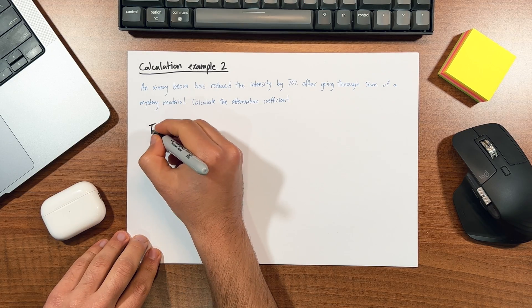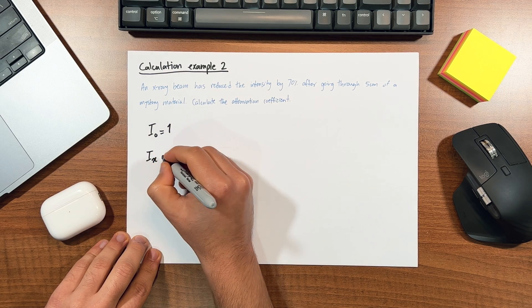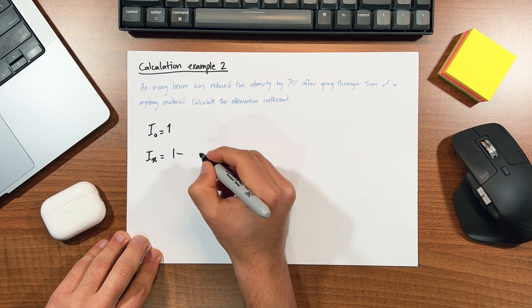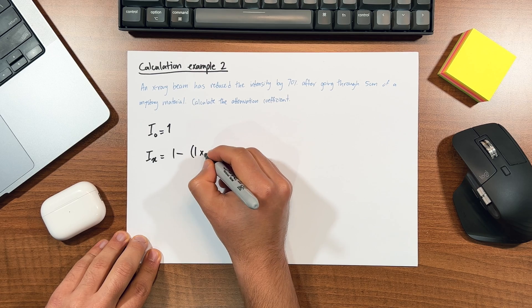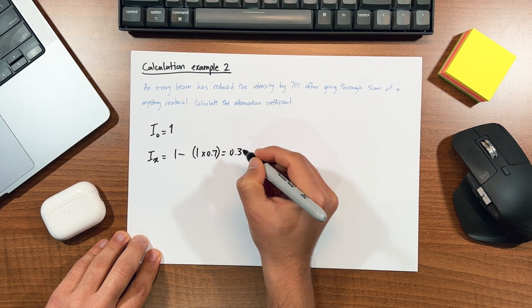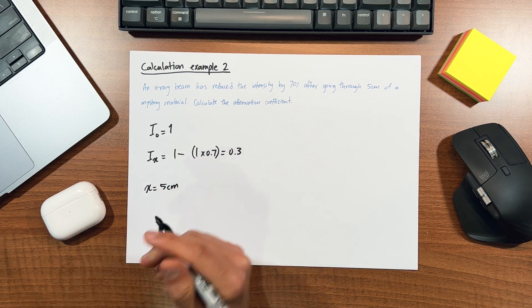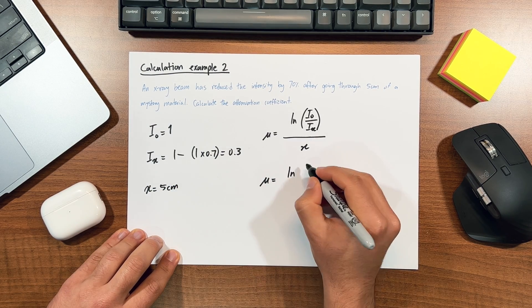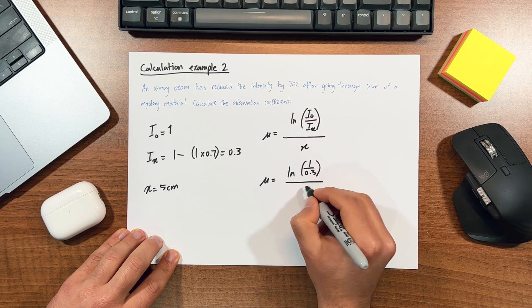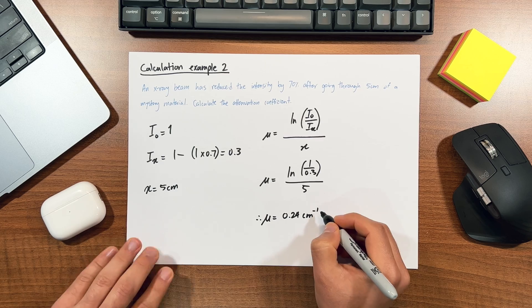Okay, so the first thing to do is to determine the original and final intensities. I'll just say that the original intensity or I0 was 1, and this was reduced by 70 percent, so that'll mean Ix would be 1 minus 1 times 0.7, which is just 0.3. Then it says that the thickness of the material was 5 centimeters, so that'll be our x. Now going back to our equation here, we substitute in our values. So we have log of 1 divided by 0.3, all divided by 5, which gives us a linear attenuation coefficient of 0.24. Now did you also get that? Bet you did, you smart cookie. Well done.